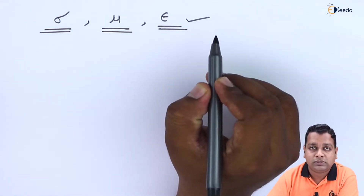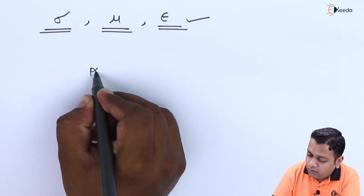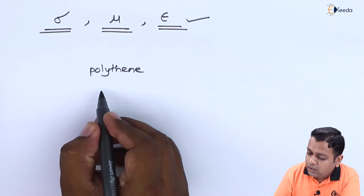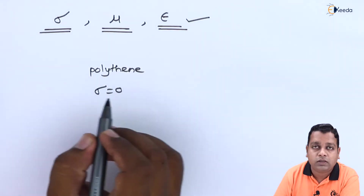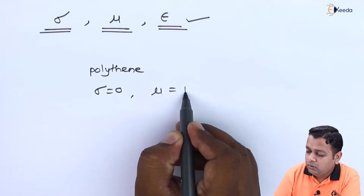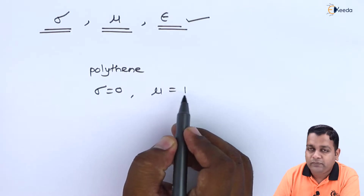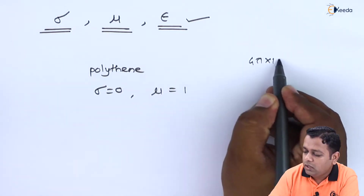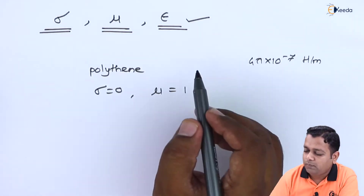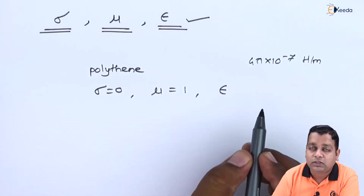For example, for polythene the conductivity value equals 0, and since it is non-magnetic the mu value equals 1, which is multiplied by mu_0, the constant value 4π × 10⁻⁷ henry per meter for air or free space. This gives the complete permeability of the polythene medium, and epsilon has a finite value.